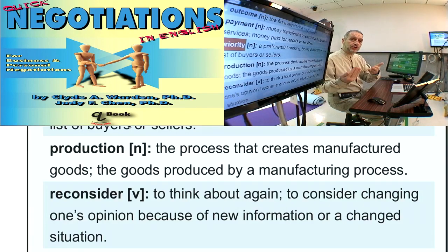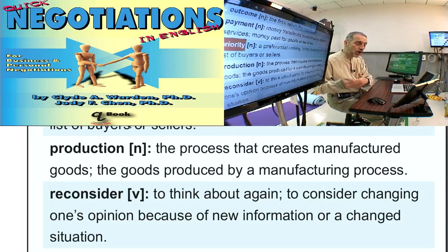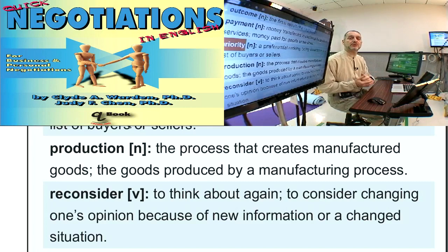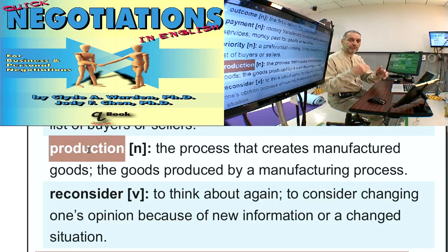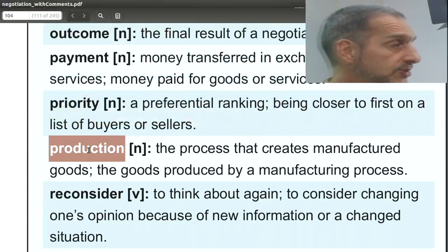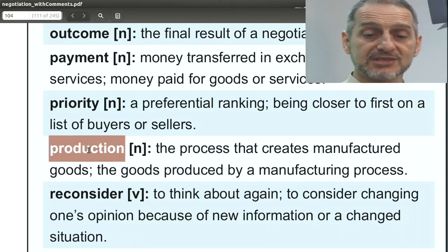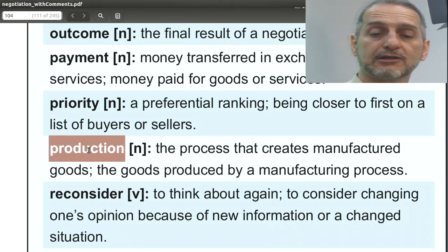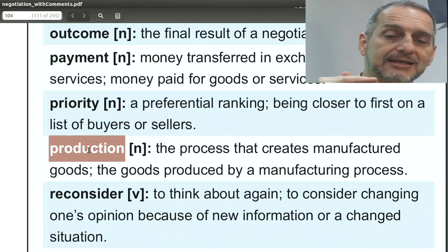In your negotiation you can say, it's our priority to have a good relationship over the next five years with your company — that's our priority, so we're going to compromise and give you a lower price. Priority is very positive and makes the relationship sound positive — a great word to use. You can also use it to get something from the other side: it's our priority to get a lower price. But it's not the same as saying that's our limit.